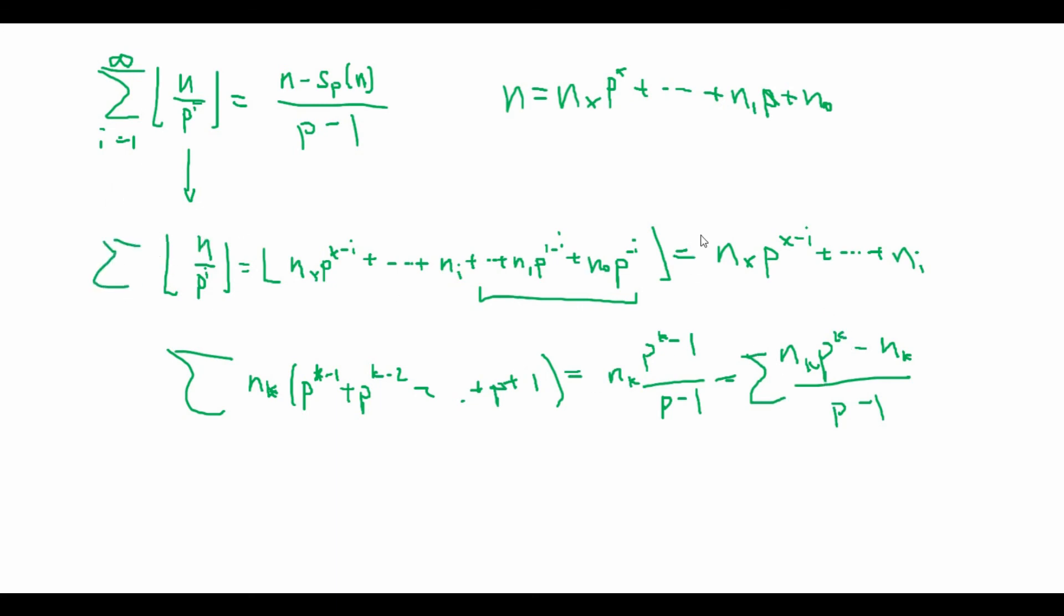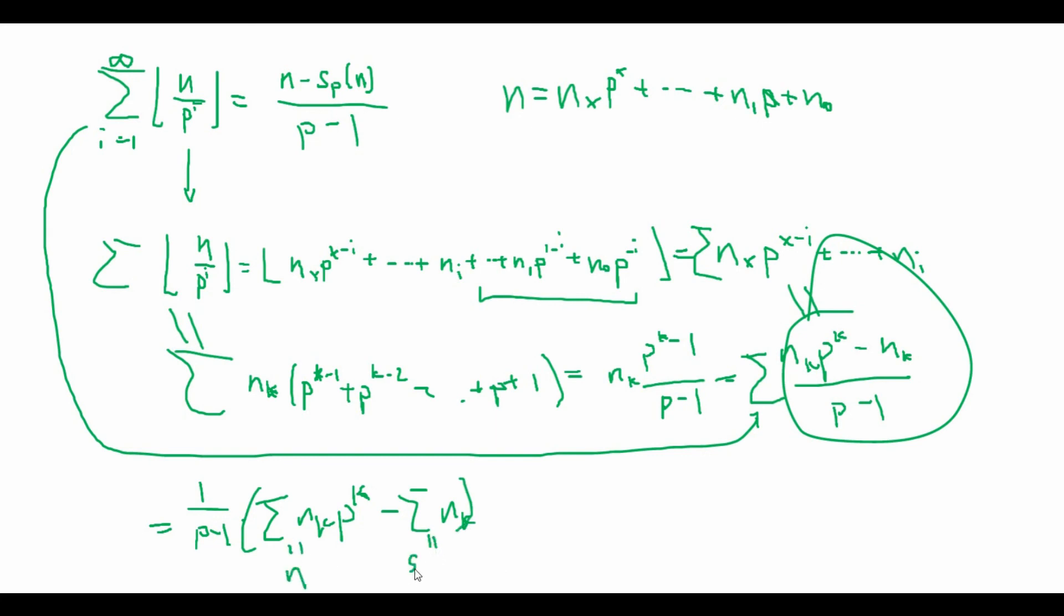The sum of this is equivalent with this thing. It's a little tedious to check this and you have to do some algebra but I'll just skip that part. I'll leave it to you as an exercise. But anyways, these two are equal. So now we know that this thing is equal to this thing. But what does this thing equal? Well, this thing is just equal to 1 over p minus 1 times the sum of n_k p^k minus the sum of n sub k. And what does this equal? This just equals n. And this equals s sub p of n. So this is equal to n minus s sub p of n over p minus 1. And we are done.